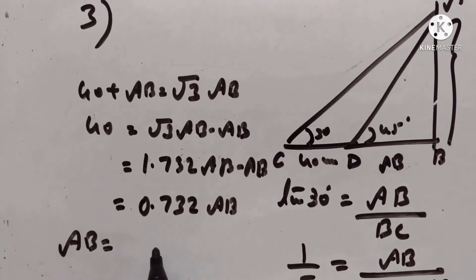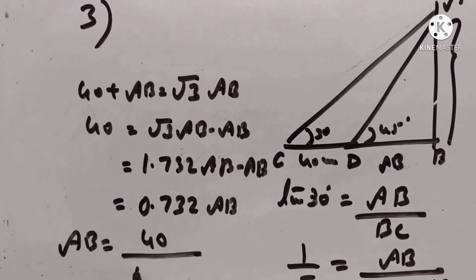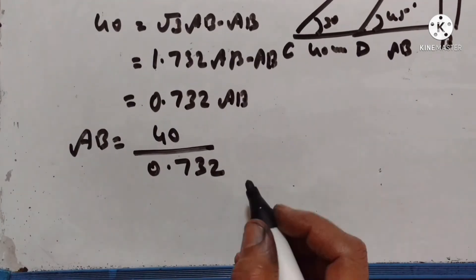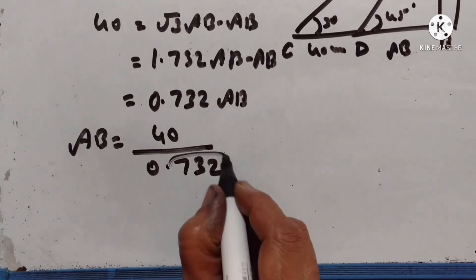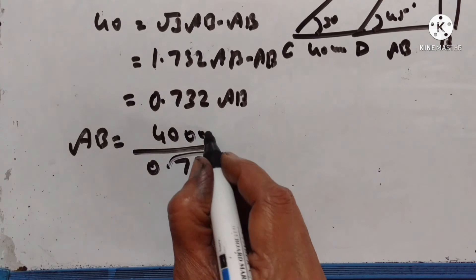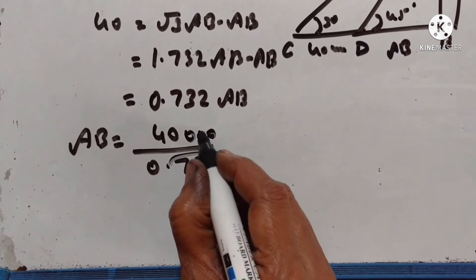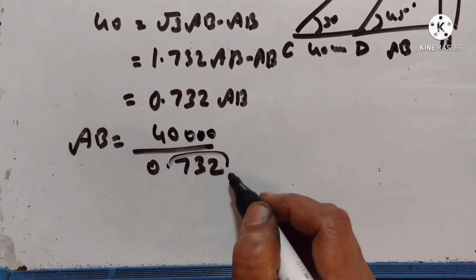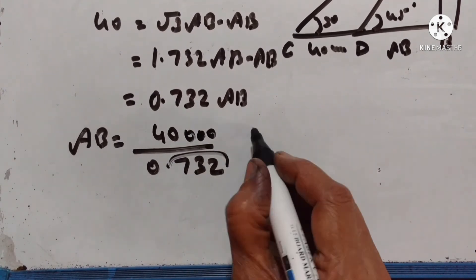AB is equal to 40 divided by 0.732. Dividing both the numerator and denominator by 4, we simplify the fraction to find AB.